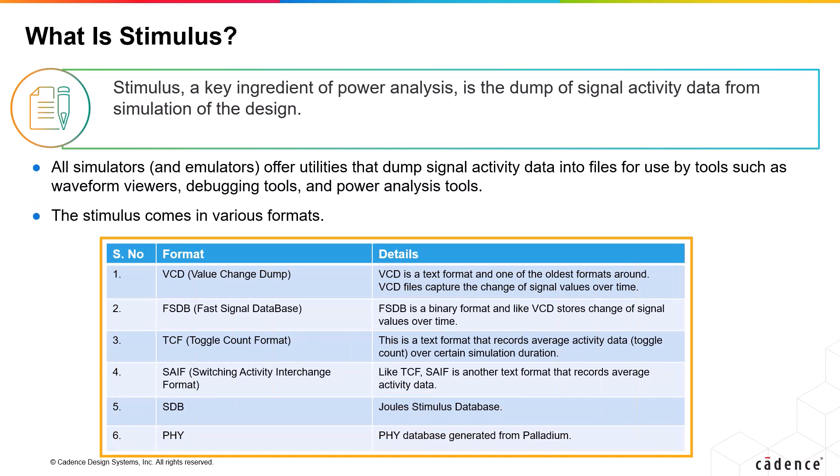VCD is the Value Change Dump and is in text format. This is one of the oldest formats. As the name suggests, the VCD file captures signal value changes over time. FSDB is a Fast Signal Database. It is a binary format, and just like VCD, it stores changes in signal values over time. Tools have widely adopted FSDB since it is much more compact than VCD.